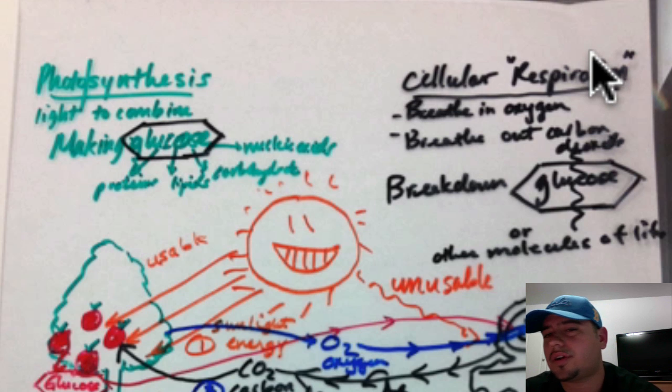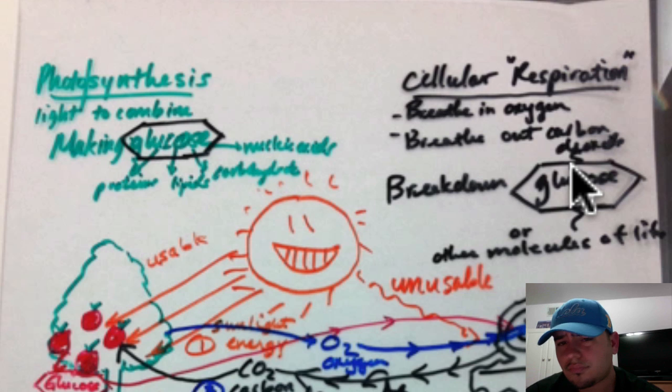So over here in cellular respiration, look at the word respiration, which means to breathe in oxygen and to breathe out carbon dioxide. So what we're going to do is we're going to break down glucose. And with the help of oxygen, of course, glucose is split in half and then it's broken down even more.